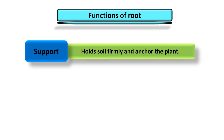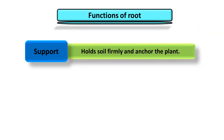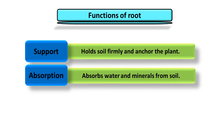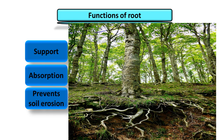The first important function of root is support. Roots hold the soil firmly and anchor the plant so that the plant gets support. The second function is absorption — roots absorb water and minerals from soil and transfer it to the stem. The next important function is prevention of soil erosion. In the search of water and minerals, roots spread in nearby areas as well as go deep into the soil, holding soil tightly, so soil cannot be displaced much by water, air, etc.